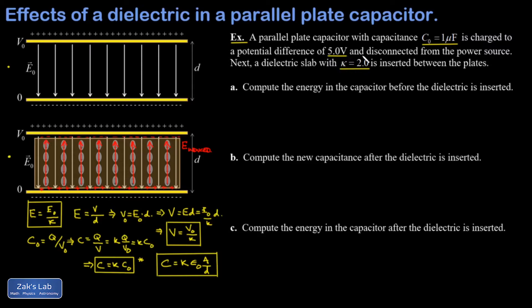So I have an original capacitance of one microfarad, I charge to five volts potential difference, and I disconnect it from the power source. Part a: compute the energy in the capacitor before the dielectric is inserted. You can use one half CV squared for this, and C is going to be one microfarad, that's 10 to the negative six farads, and V is five volts, and when I run the numbers on this I get 1.25 times 10 to the negative fifth joules.